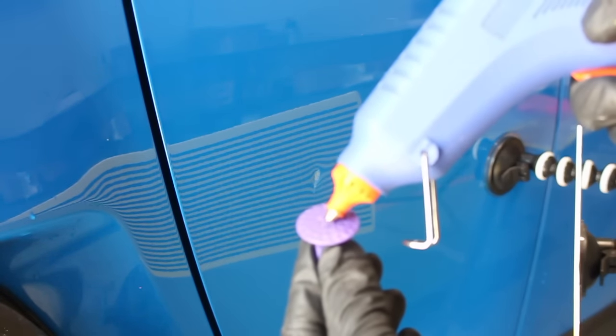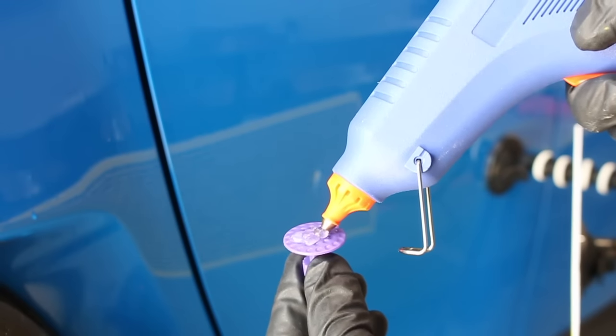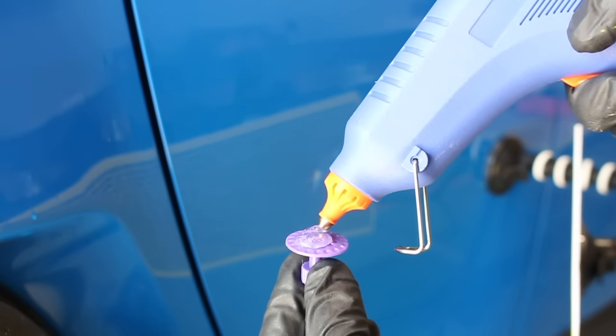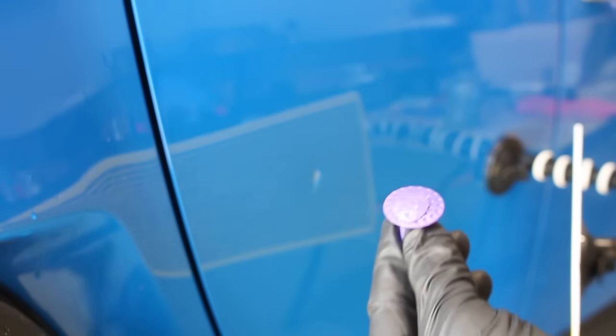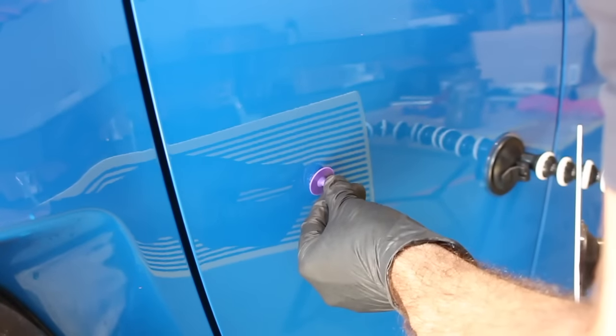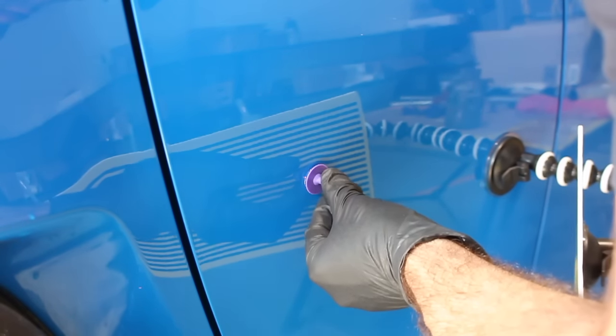I've got one of the plastic tabs that I think is a good size. I'm going to put some glue on it, then attach it to the dent. That normally takes a few minutes, and it's dry and ready to be pulled.